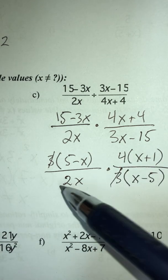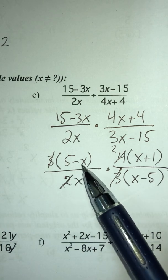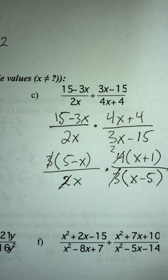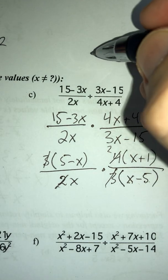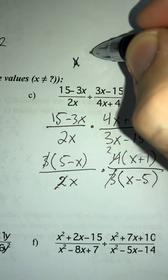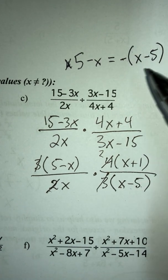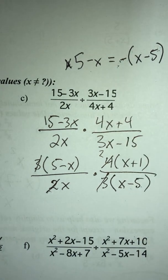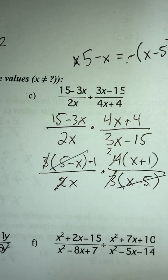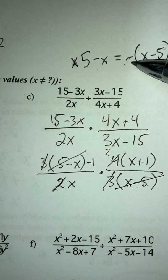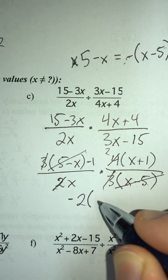Now simplify: the 3 and 3 cancel, and 4 divided by 2 gives 2. Notice I have (5 − x) and (x − 5) — these are actually the same thing if you factor out a negative, since 5 − x equals negative(x − 5). So those cancel, leaving a negative 1. My final answer is negative 2(x + 1) over x.